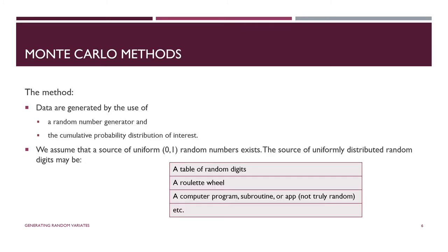Monte Carlo methods are techniques we use when we want to generate data. We need a random number generator and the cumulative probability distribution for the distribution we want to generate values from. We assume we have a source of random numbers that are uniform between zero and one — a stream of uniform [0,1] random numbers from a table of random digits, a roulette wheel, or more than likely today from a computer program generating pseudo-random numbers.